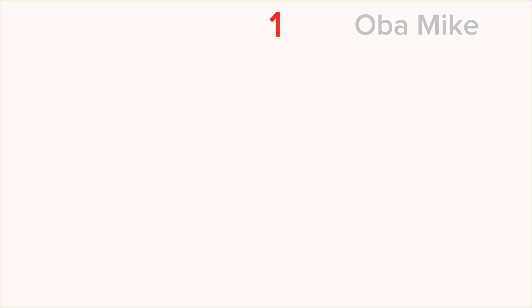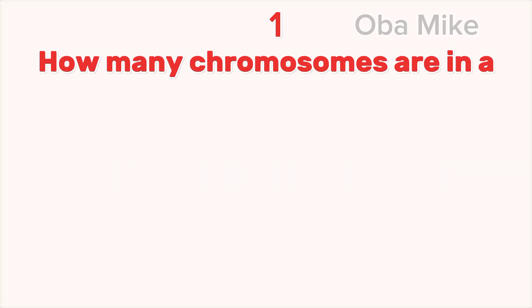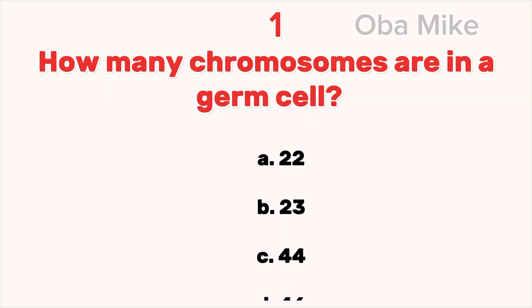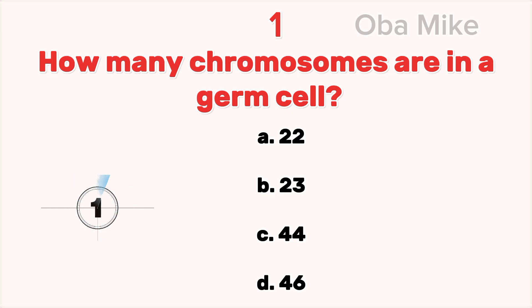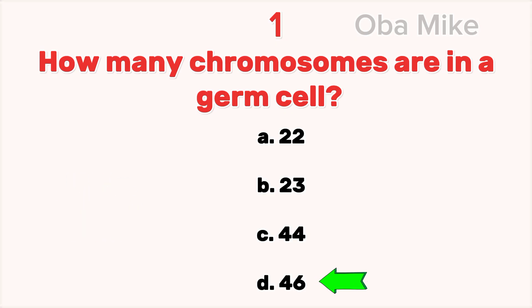1. How many chromosomes are in a germ cell? A. 22, B. 23, C. 44, D. 46. The correct answer is D. 46.